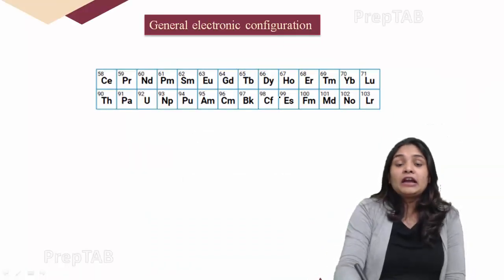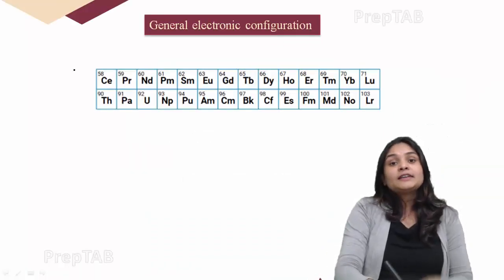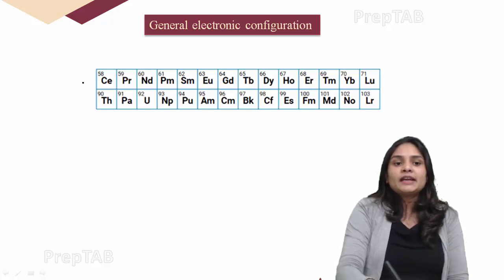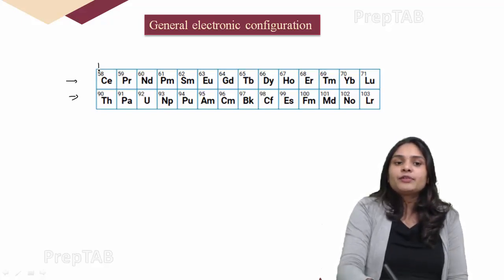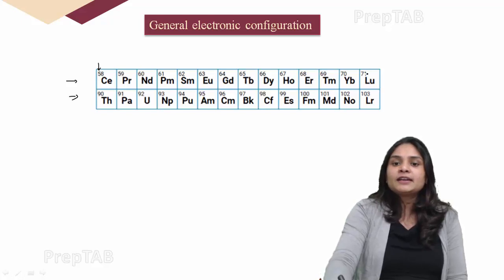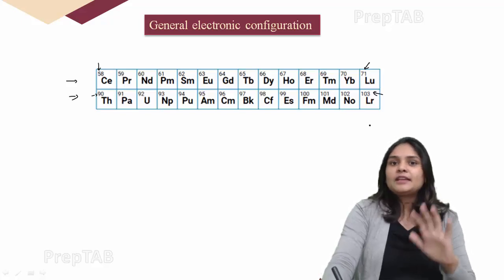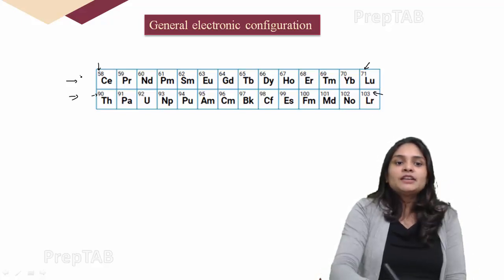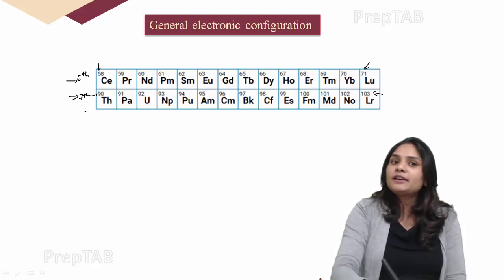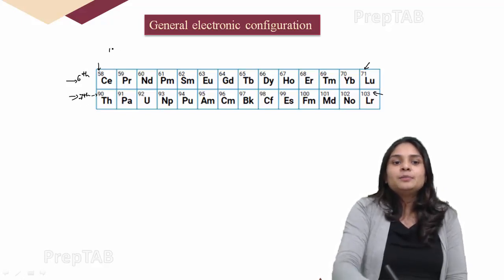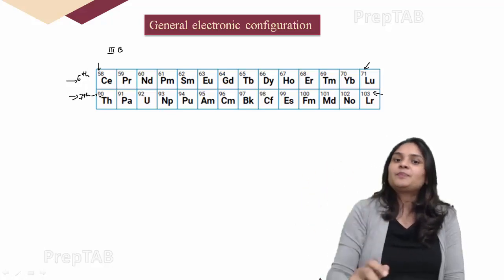This is F-block elements. As already discussed in Part 1, this is the lanthanide series and this is the actinide series. Lanthanides start from atomic number 58 to 71, and actinides go from 90 to 103. Lanthanides belong to the 6th period and actinides to the 7th period, both present in the 3rd B group.